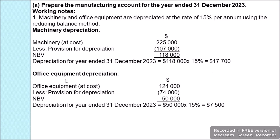For office equipment depreciation, we start with cost of $124,000, subtract the provision for depreciation of $74,000, giving a net book value of $50,000. Applying the 15% depreciation rate gives office equipment depreciation of $7,500 for the year ended 31 December 2023.